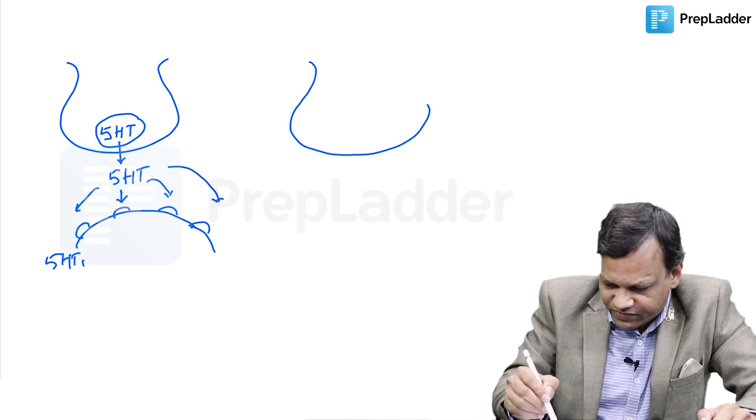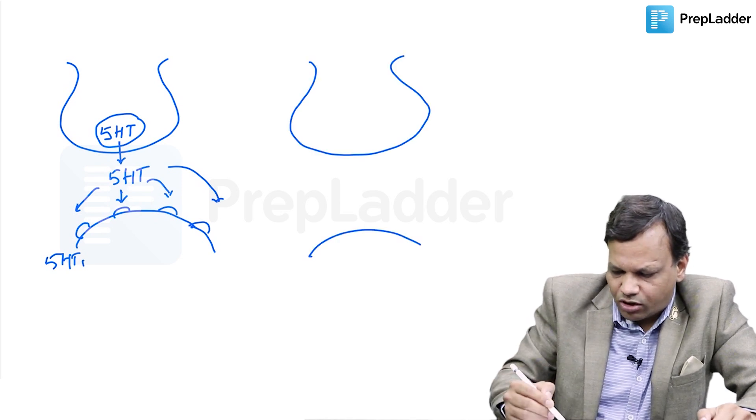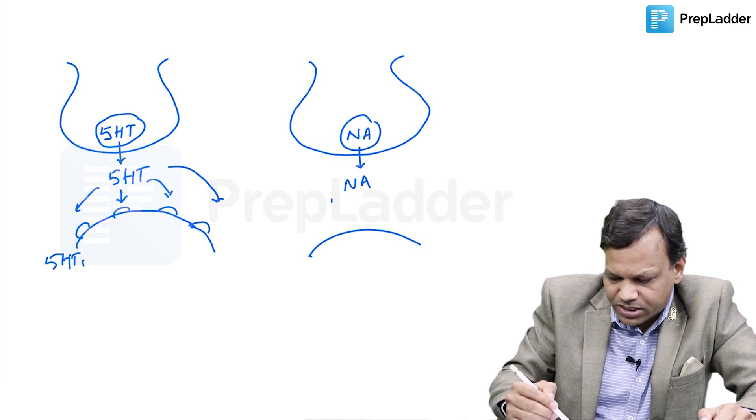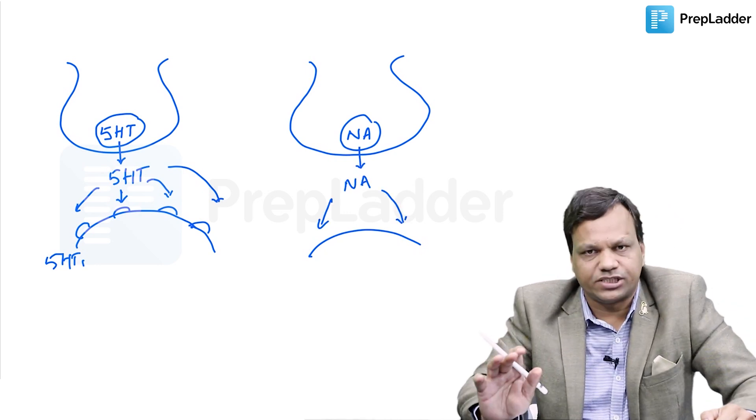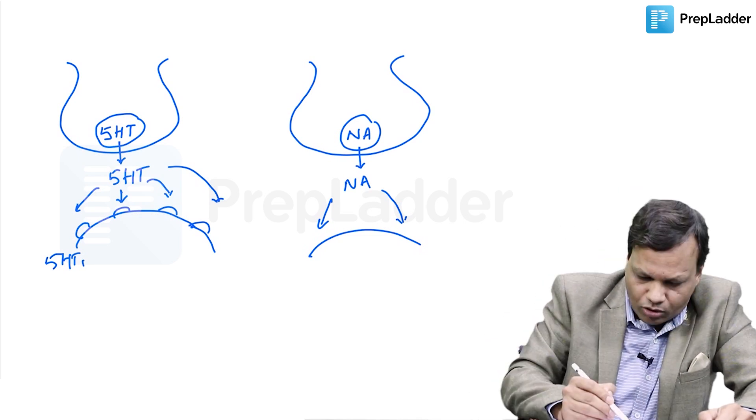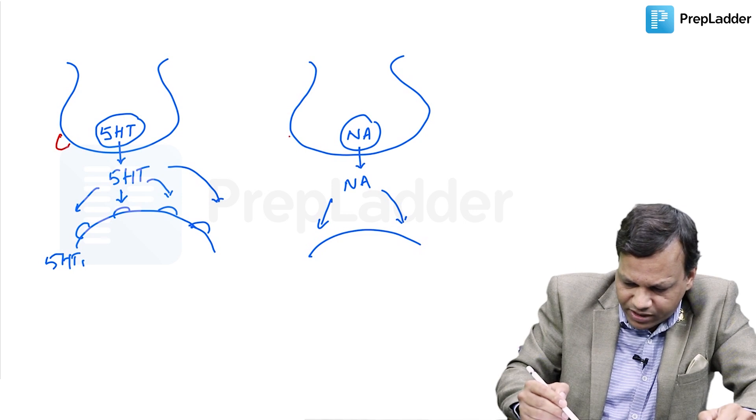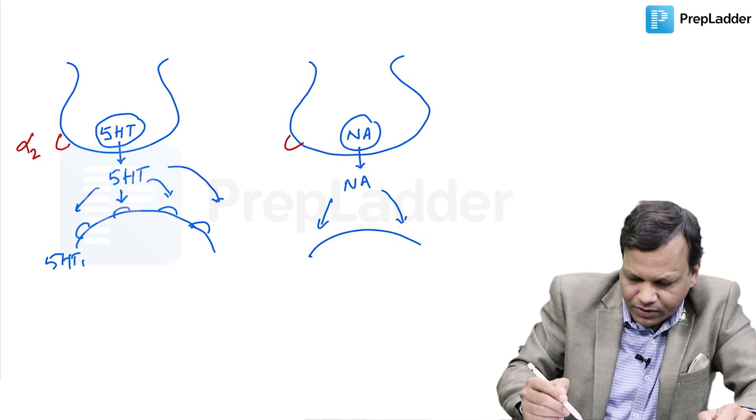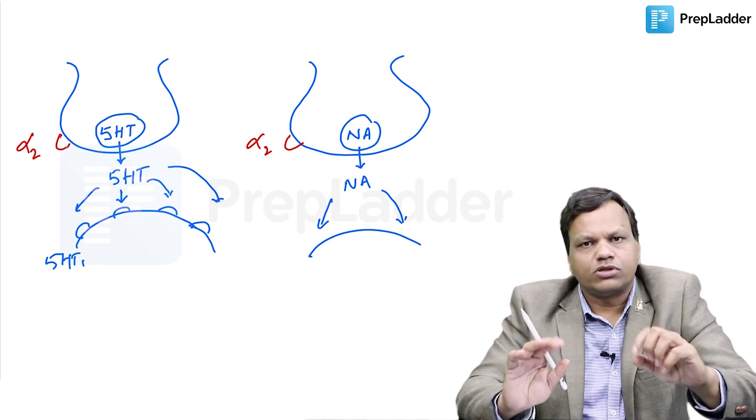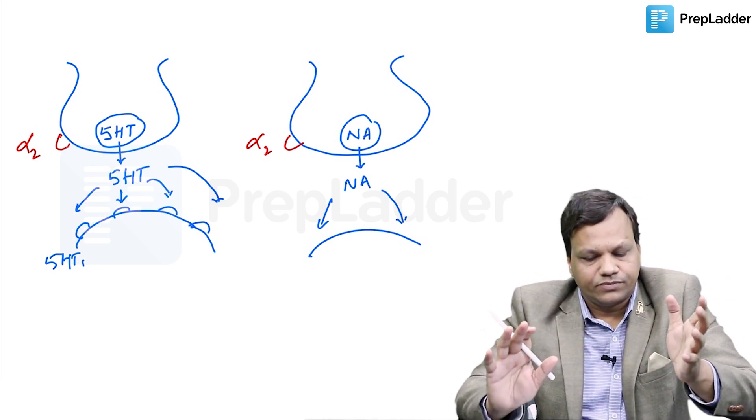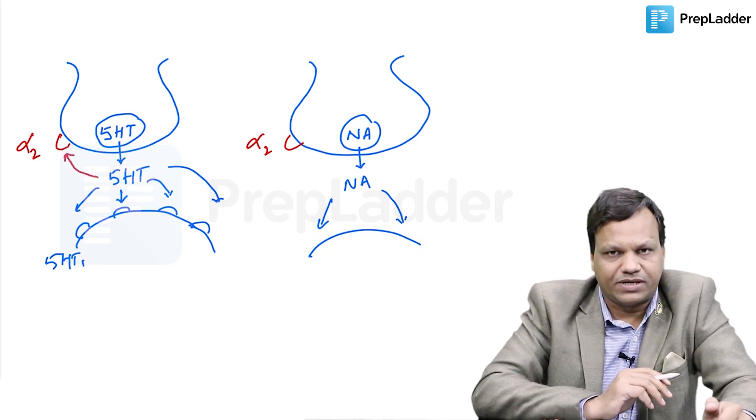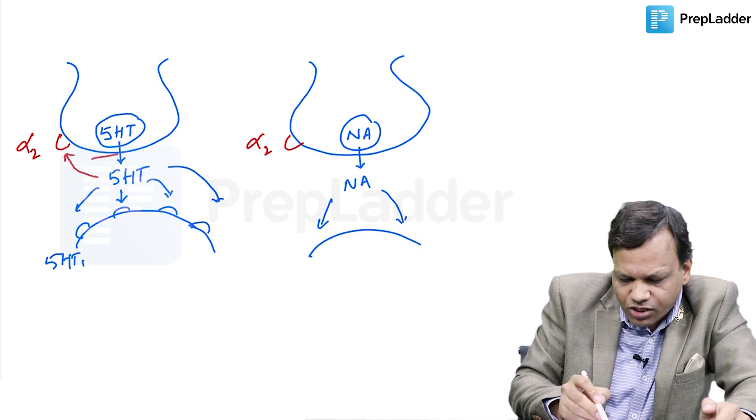Another neurotransmitter which we increase to treat depression is noradrenaline. Noradrenaline is stored, it is released. Then it can stimulate the receptors and treat the depression. Now, on both serotonin and noradrenergic neurons, there is presence of alpha-2 receptors presynaptically. Alpha-2, we all know the function is to act like a brake. When we stimulate alpha-2, that means when 5-HT stimulates alpha-2 receptors, it will inhibit the release of serotonin.